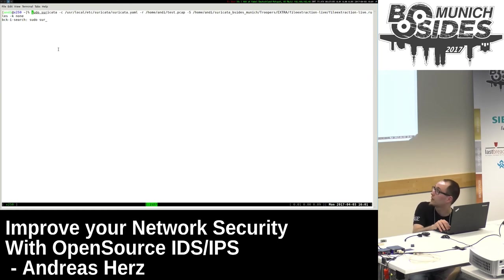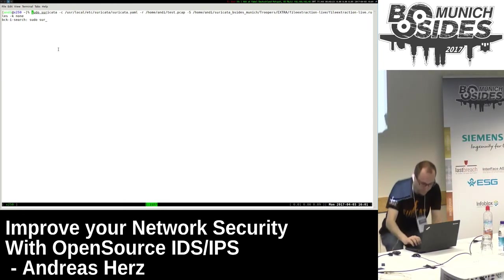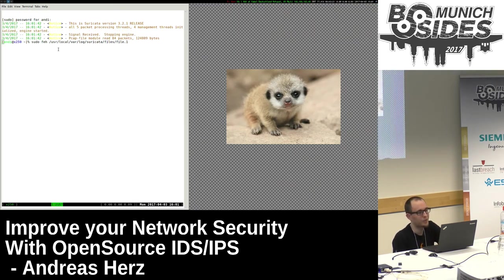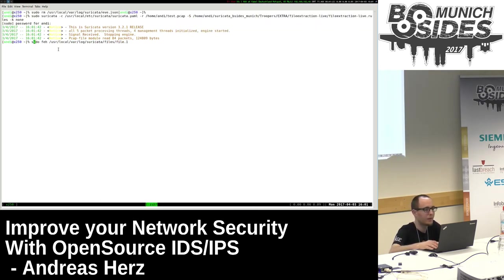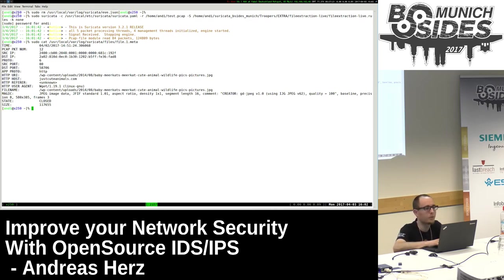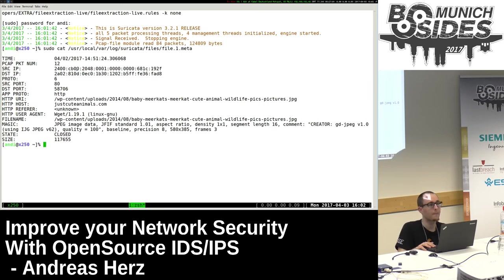Now for the demo: this is a simple example — I'm running Suricata on a PCAP I recorded yesterday, pointing to the config file, the PCAP, and a dedicated rule file. Suricata runs quite fast. Now let's look at what files were extracted — this is the file I got from the HTTP traffic. I also get the metadata: the timestamp, source IP, destination IP, HTTP details, and the filename. Suricata uses libmagic to determine what sort of file it is.